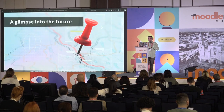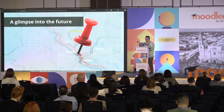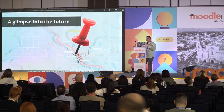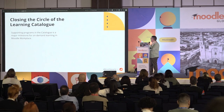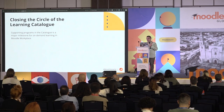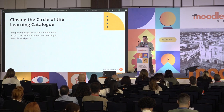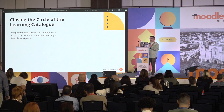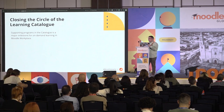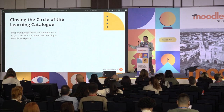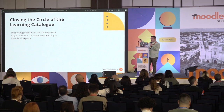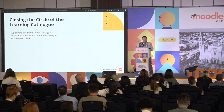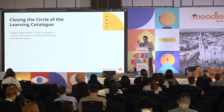Now let's look at the future. In Moodle Workplace 5.0, we're going to support programs in the catalog — the most used Workplace feature. Supporting programs is a major milestone for on-demand learning. In Workplace 4.3, before the catalog was introduced, 83% of Workplace sites used programs. By supporting programs in the catalog and allowing self-enrollment, we're going to benefit four out of five users when their site is upgraded to 5.0. Some sites likely haven't upgraded to 4.4 because of this, so now they'll move forward.